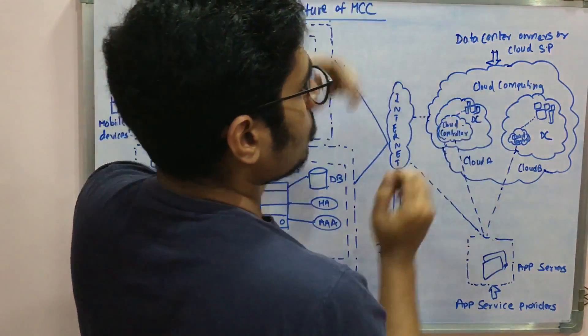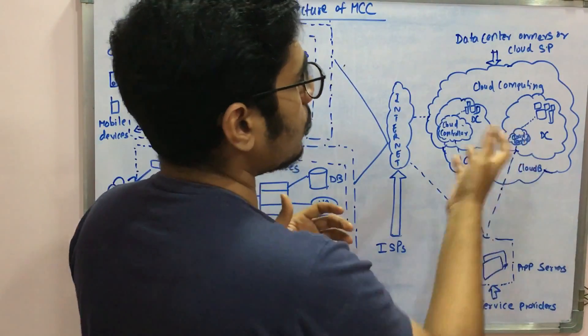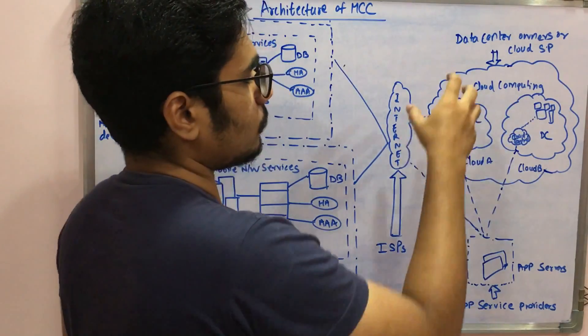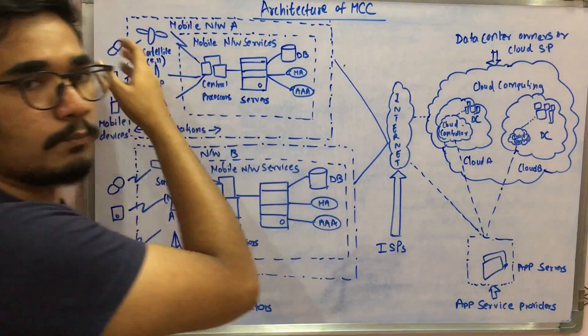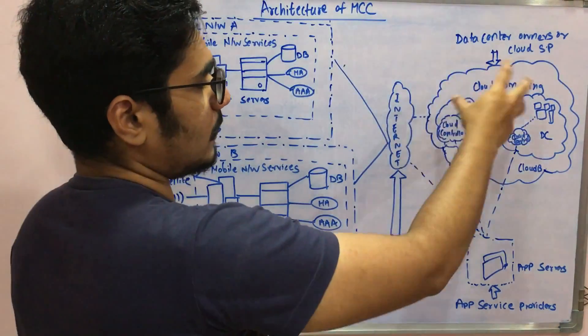When you move on to the cloud layer, you have two clouds - cloud A and cloud B. Cloud A has a cloud controller and then you have a data center. Cloud controller is mainly used for processing of the data which you get from mobile devices.